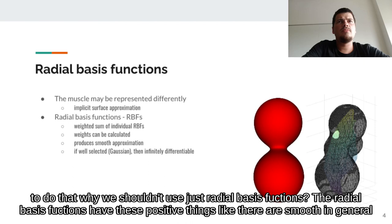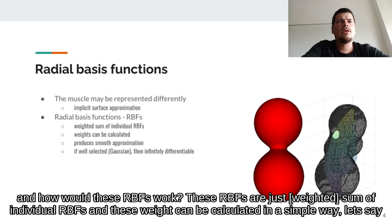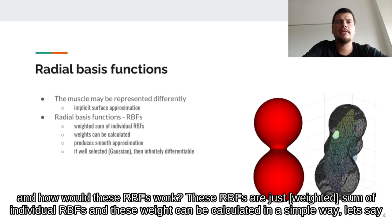Radial basis functions have these positive properties: they are smooth in general, and they can be infinitely differentiable if we select the RBF well. These RBFs are just a sum of individual RBFs, and the weight can be calculated in a straightforward way.